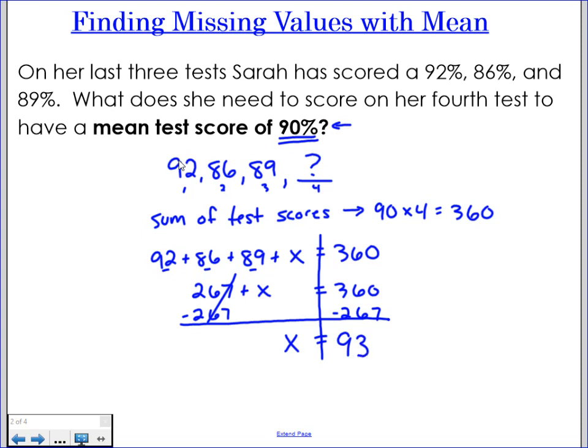Okay, so that means that Sarah needs to get a 93% on her fourth test to make the mean of her test scores 90%. So basically we have done two things. We have multiplied the mean times the amount of numbers we have. And then we have subtracted the sum of the test she already has from this 360. So she needs to get a 93% on her fourth test.